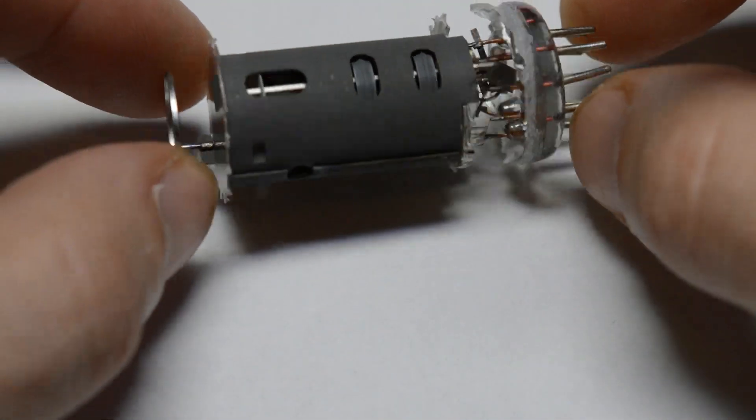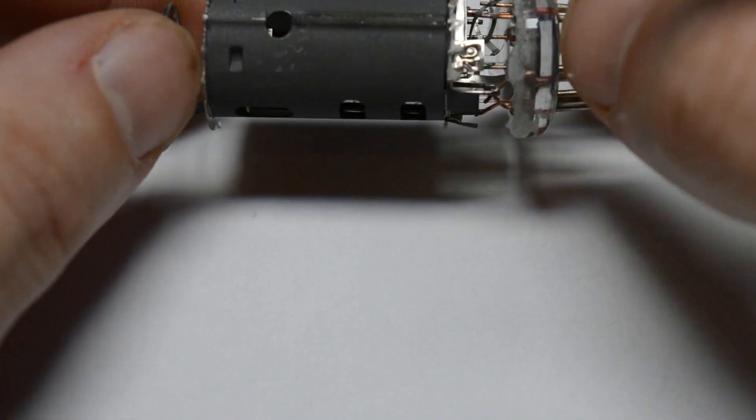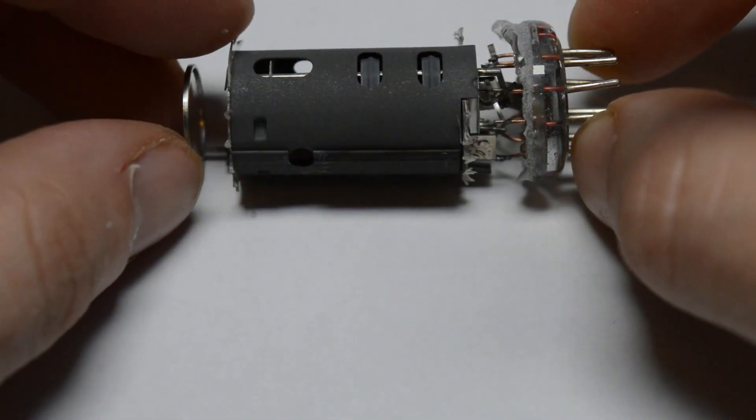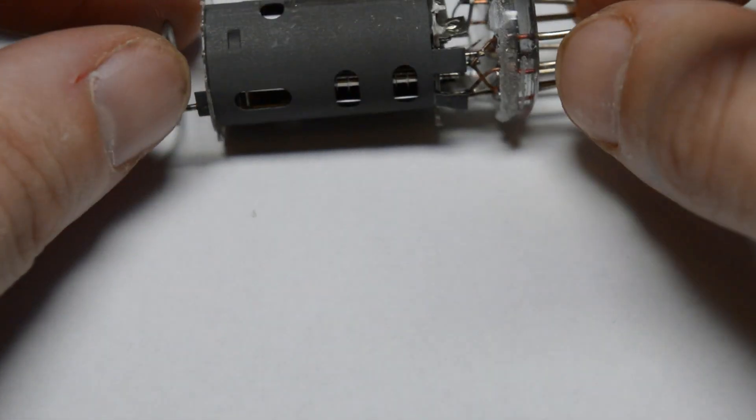Before going further in the teardown, let's just take a moment to see why this thing has so many grids. I mean, a normal triode has one grid and it's happy. Why does this thing need five?